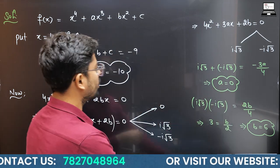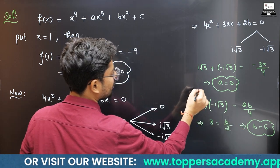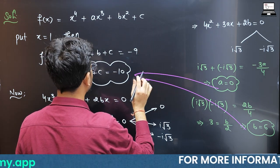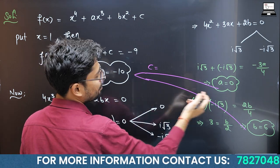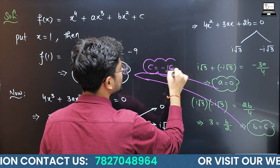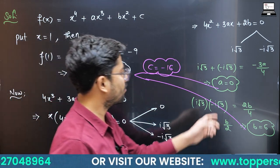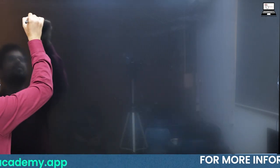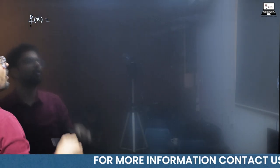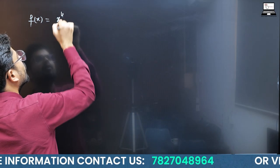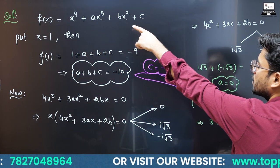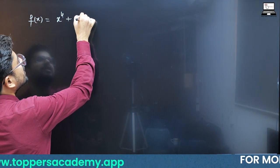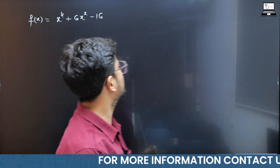With a = 0 and b = 6, substituting into a + b + c = -10 gives c = -16. So f(x) = x⁴ + 6x² - 16.